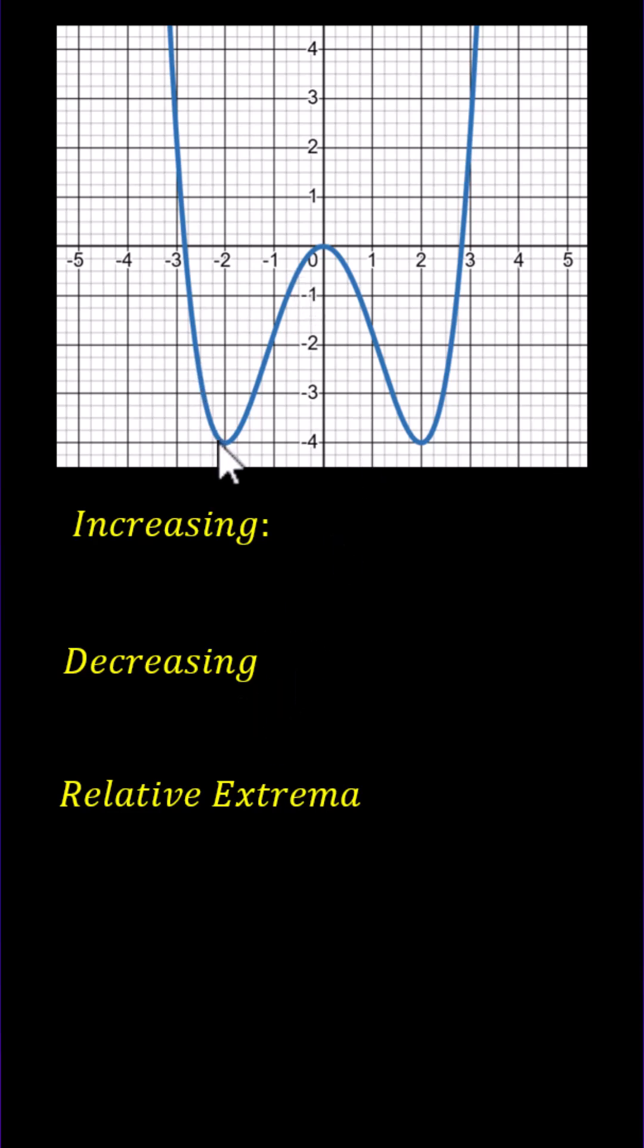Let's begin by identifying the high points and low points on the graph. We have two low points at (-2, -4) and (2, -4), and a high point at (0, 0).